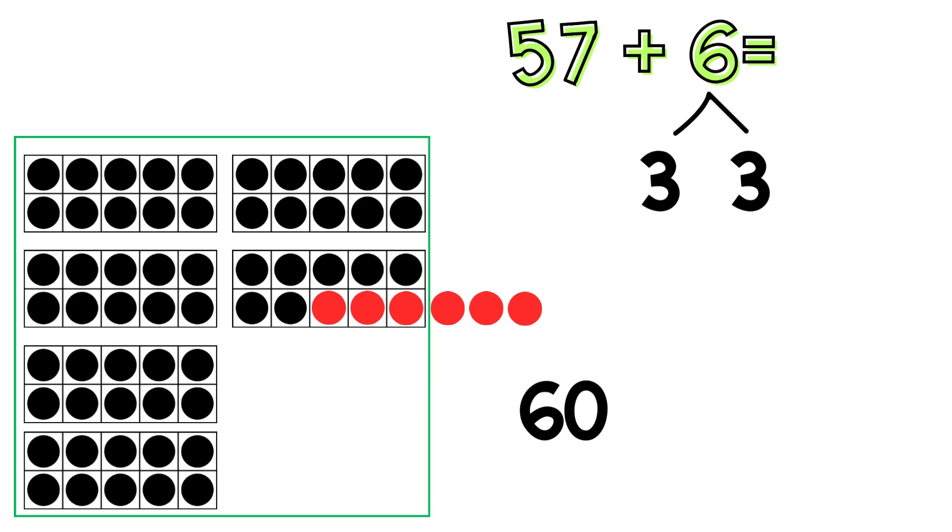We had 3 extra chips outside the frame, so we needed to add them to 60. Your equation should have been 60 plus 3 equals 63. Did you get that? Let's try one more.